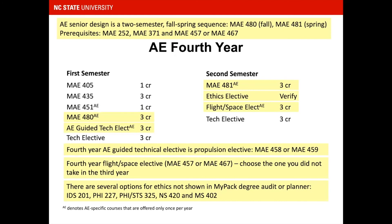All of the ethics elective courses can double-count with at least one other GEP category. View the Understanding GEP Categories video for a more in-depth explanation. There are also two technical electives in the fourth year; you may choose any courses from the list of MAE-approved technical electives.